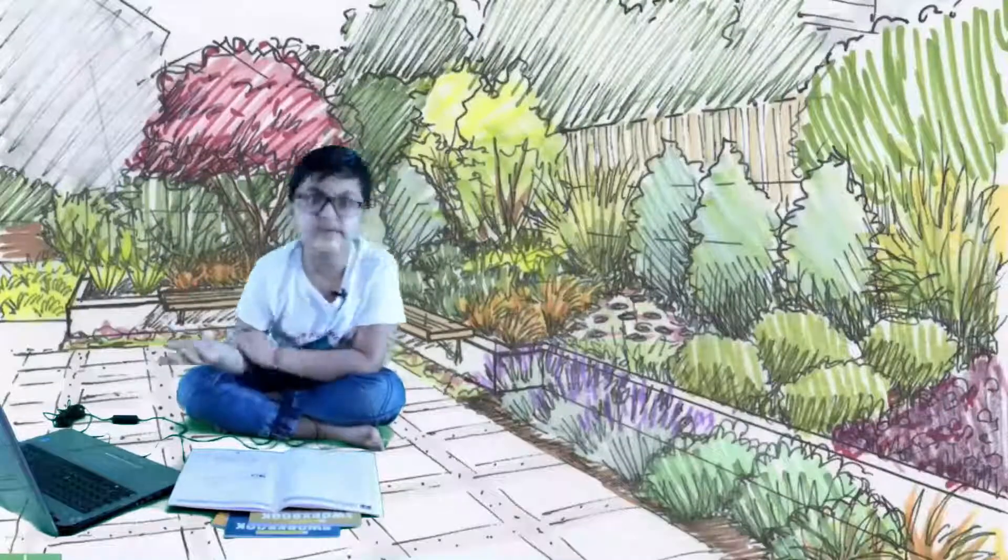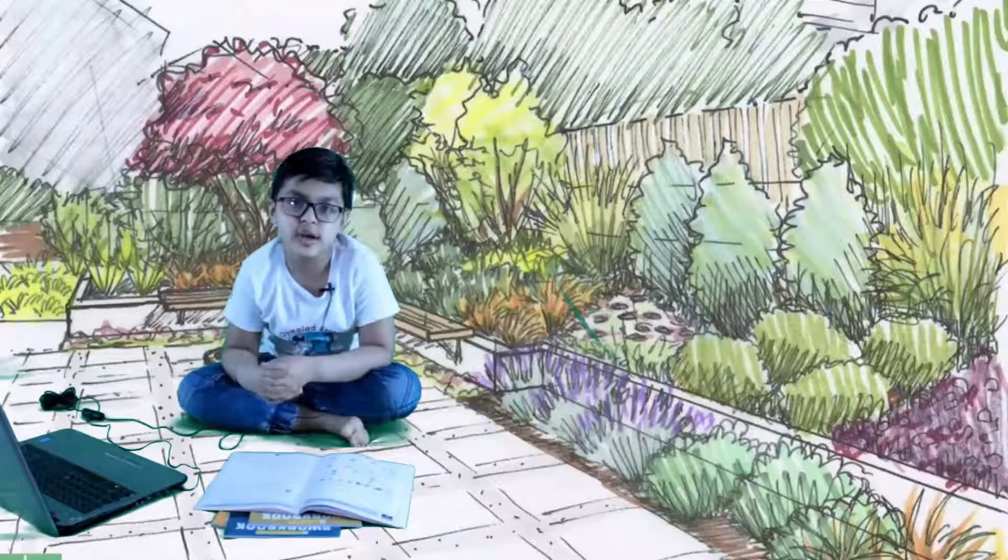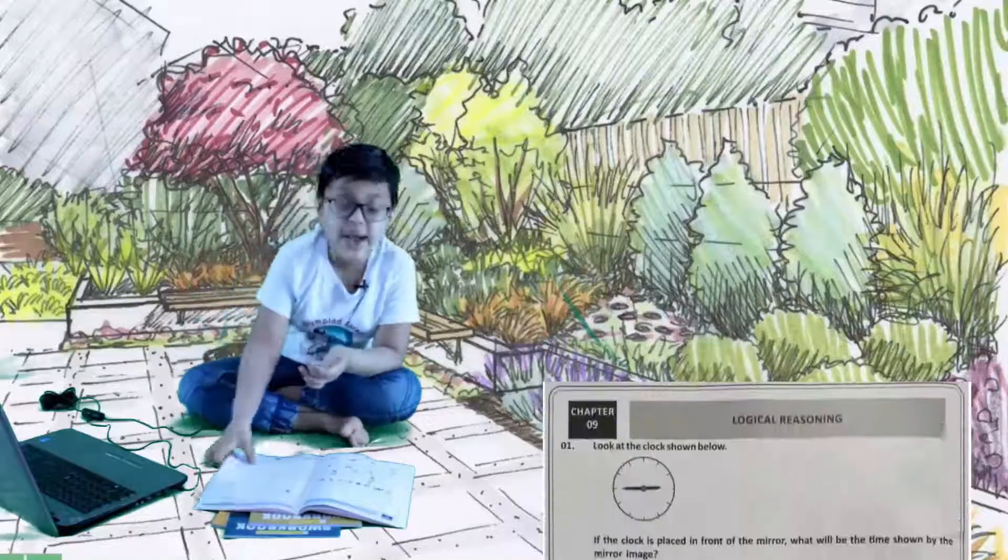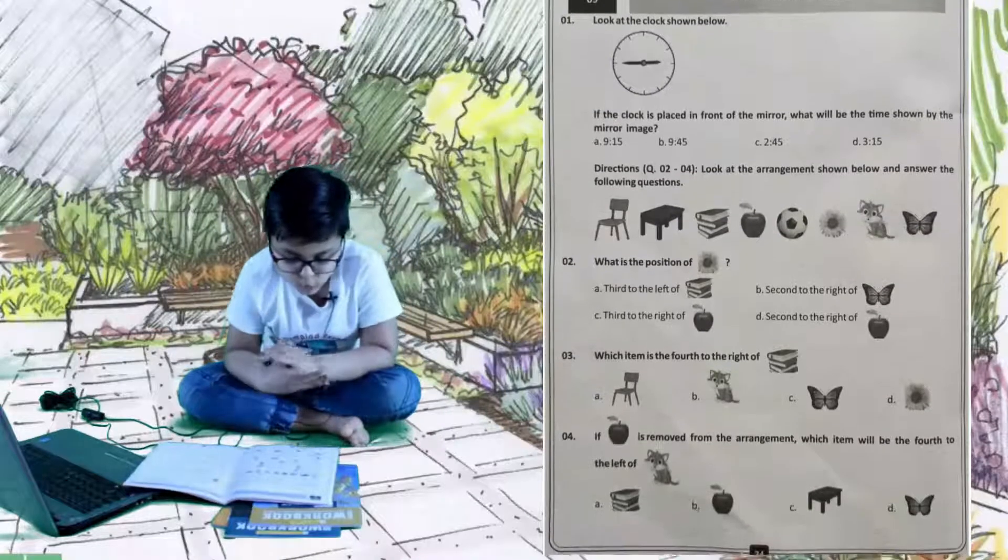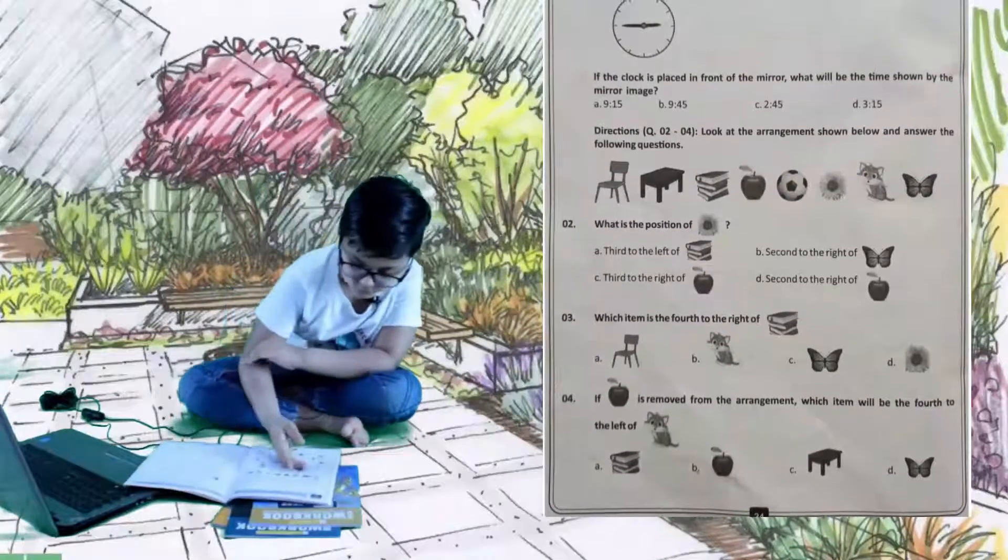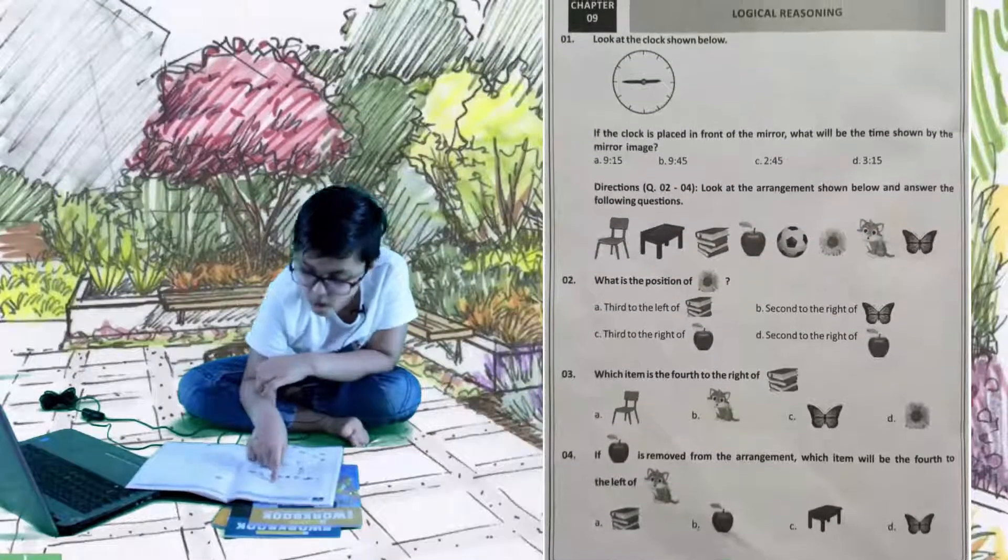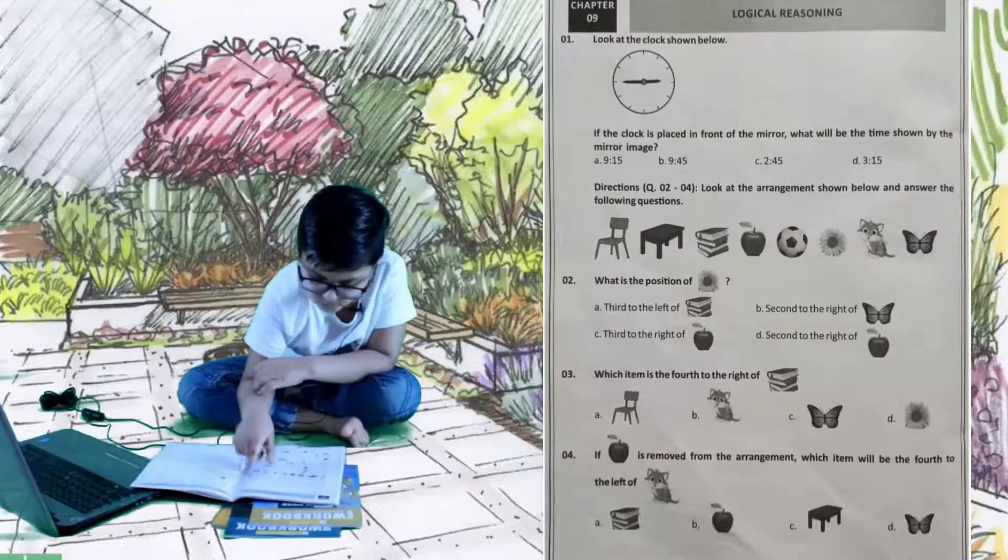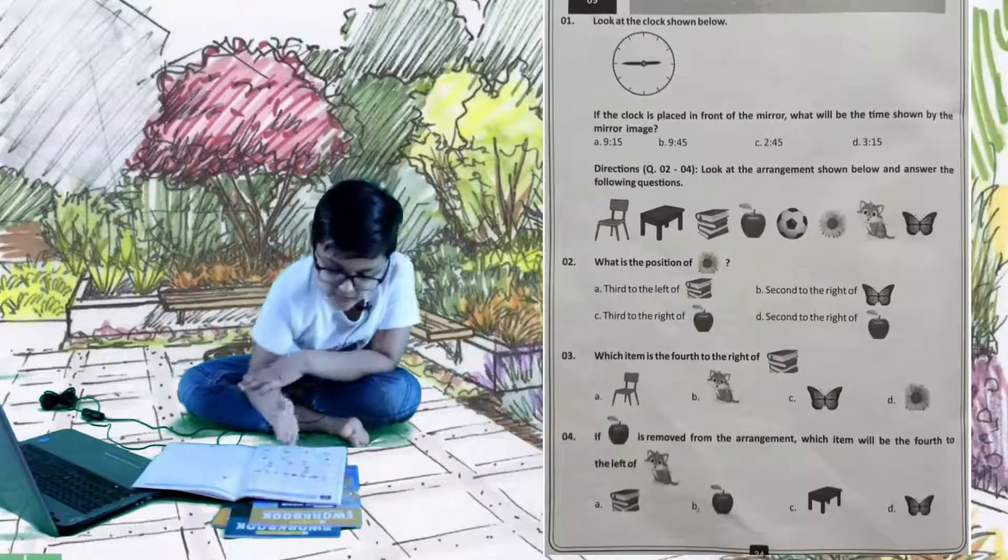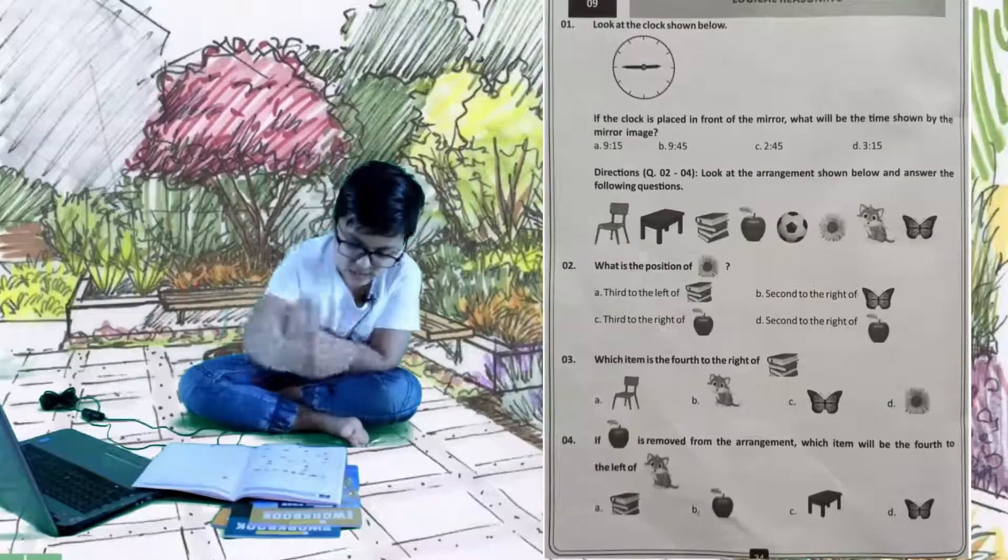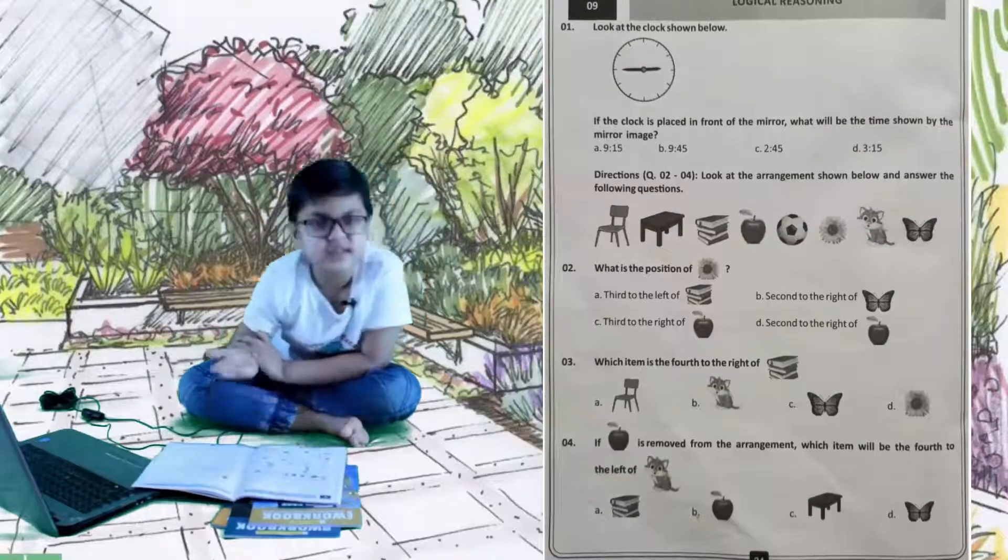The ninth chapter is logical reasoning, and it's the last. Let's start with our first question: look at the clock shown below. If the clock is placed in front of the mirror, what will be the time shown by the mirror image? It's now 3:45. If we just do its opposite, it will be like 9, and then here it will be 15. Let's see, A is 9:15, that's right.